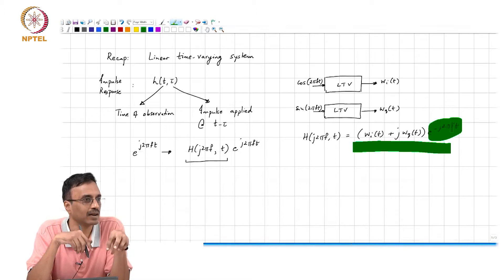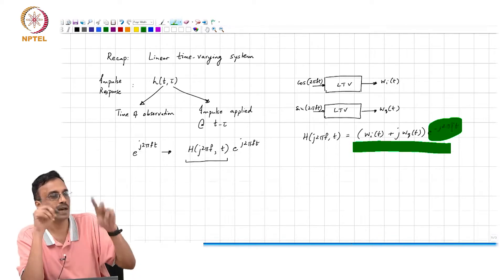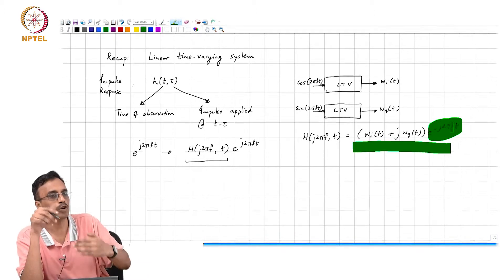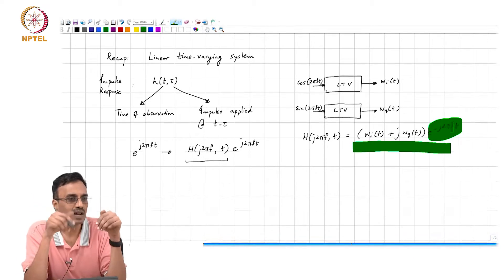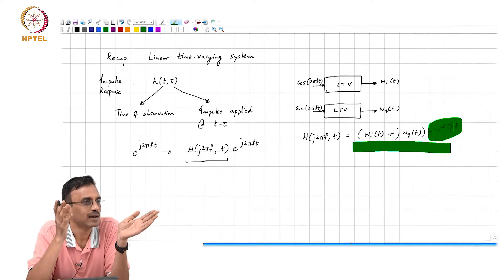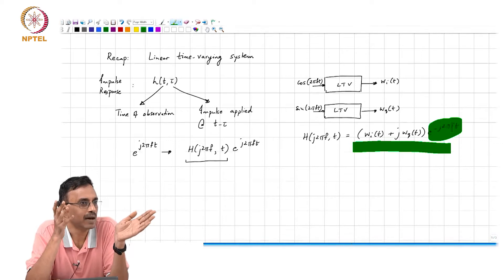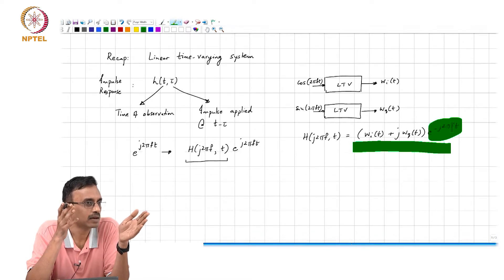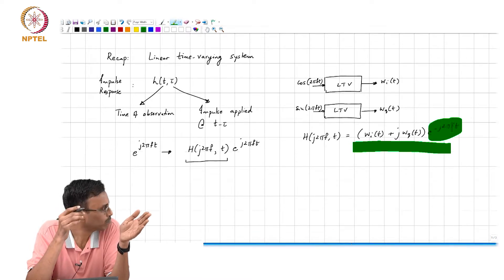Remember: if you always get confused whether you need to multiply by e to the minus j 2 pi f t or e to the plus j 2 pi f t — in the time invariant case, you would like to sit in a frame which is basically moving with the same angular velocity as the e to the j 2 pi f t phasor. Does that make sense?